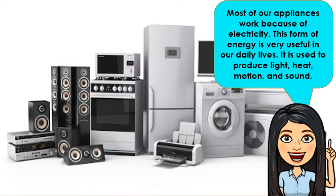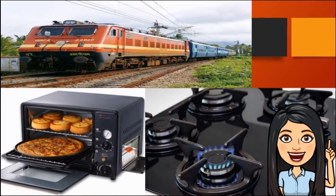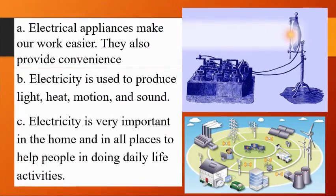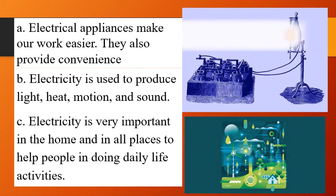Electricity is used in our daily lives. It is used to produce light, heat, motion, and sound. It helps people to do their daily activities. It is also used in transportation, to power machines, in cooking and baking, and to operate gadgets. Electrical appliances make our work easier and provide convenience. Electricity is very important in our home and in all places to help people in doing daily life activities.